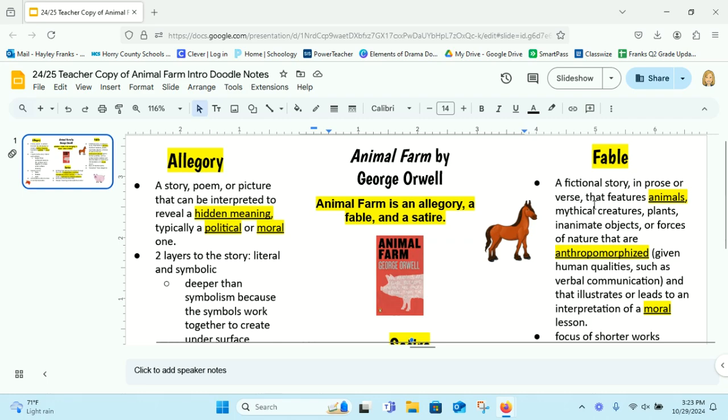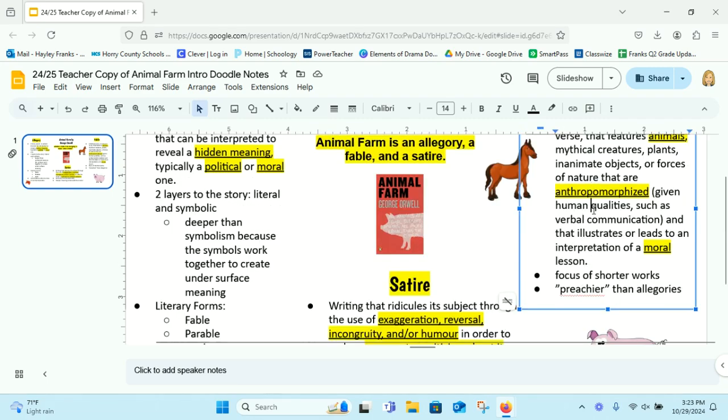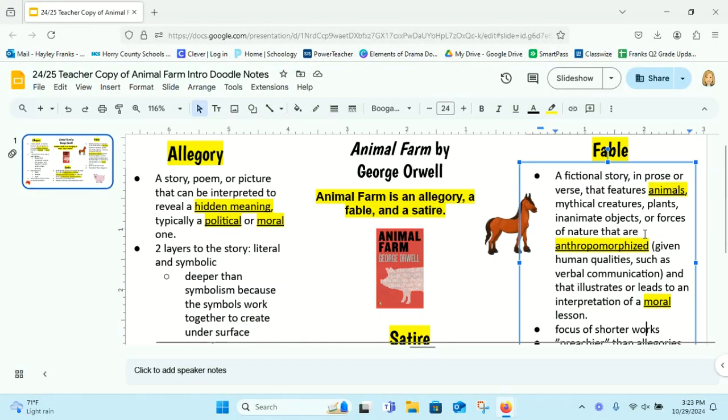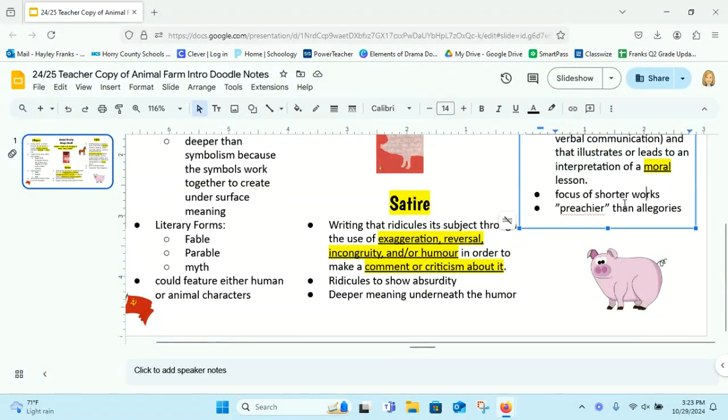objects or forces of nature that have human qualities. And there is a moral lesson underneath that. It's the focus of many shorter works. That's why we think like Aesop's fables and stuff like that.